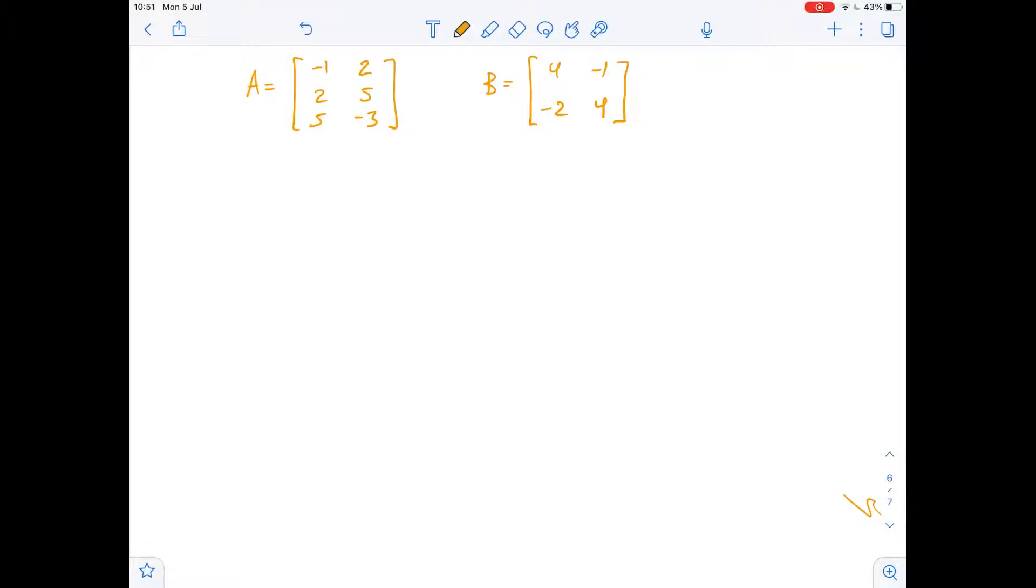So we need to compute the product AB by the definition of the product of matrices where AB1 and AB2 are computed separately and by the row column rule for computing AB. We will start by finding AB1.